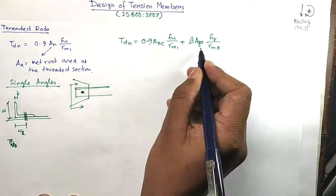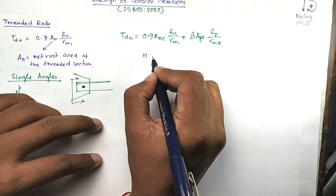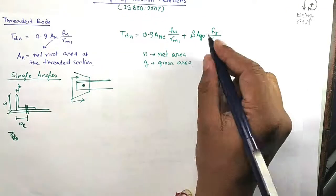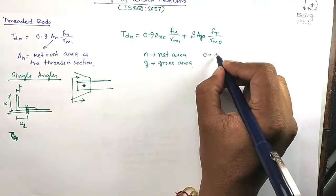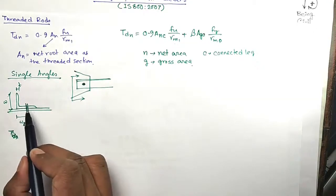What is ANC and AGO? Keep in mind that here N means net area, G means gross area. And C, C is connected leg which means this angle, this leg is connected.